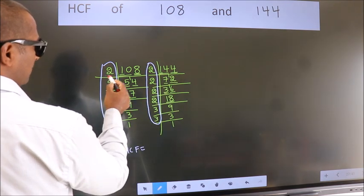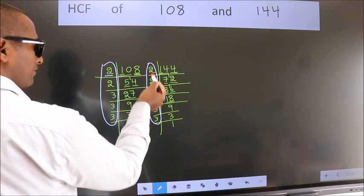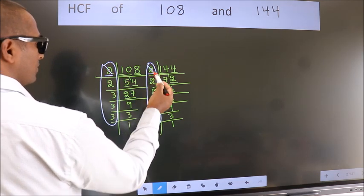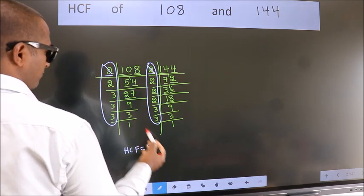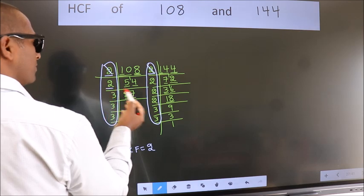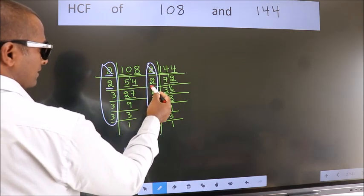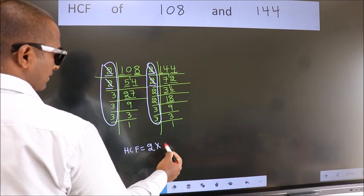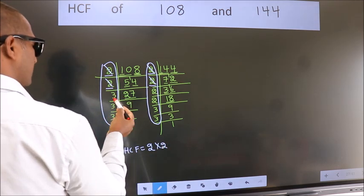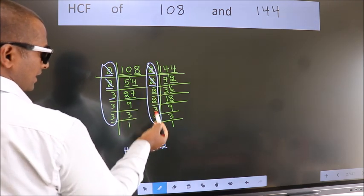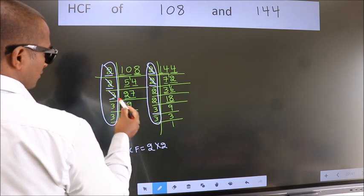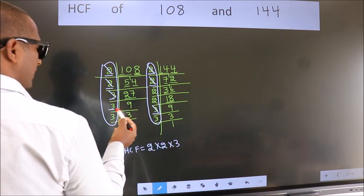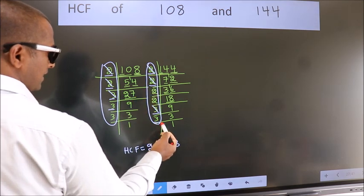Starting with the number 2, do we have 2 here? Yes. So cut 2 right here. Next number 2, do we have 2 here? Yes. So cut 2 right here. Next number 3, do we have 3 here? Yes. So cut 3 right here. Next number 3, do we have 3 here? No.